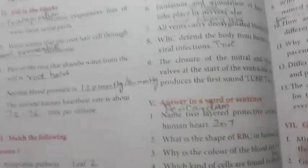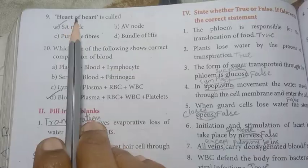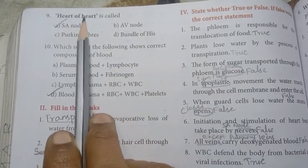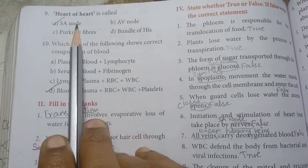Then page number 214. Ninth: heart of heart is called SA node. A option, right answer.